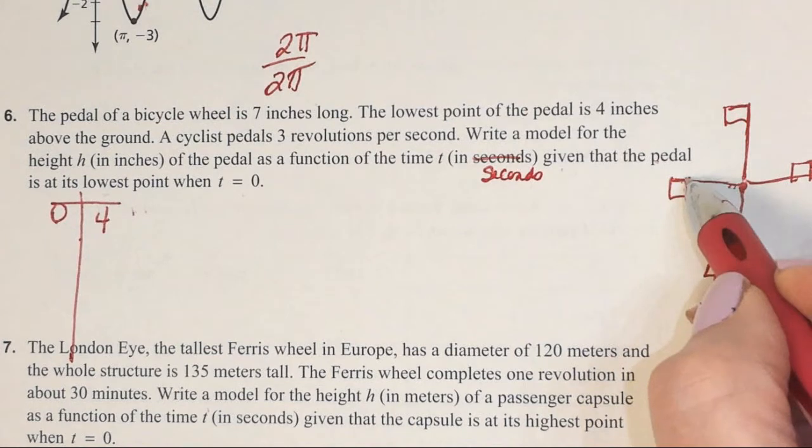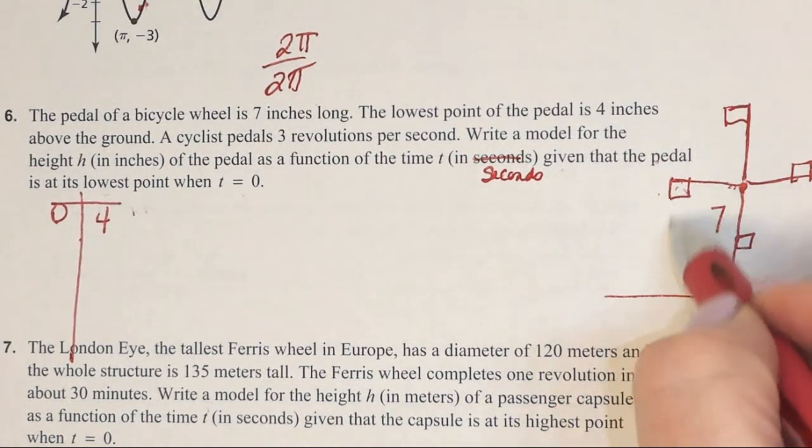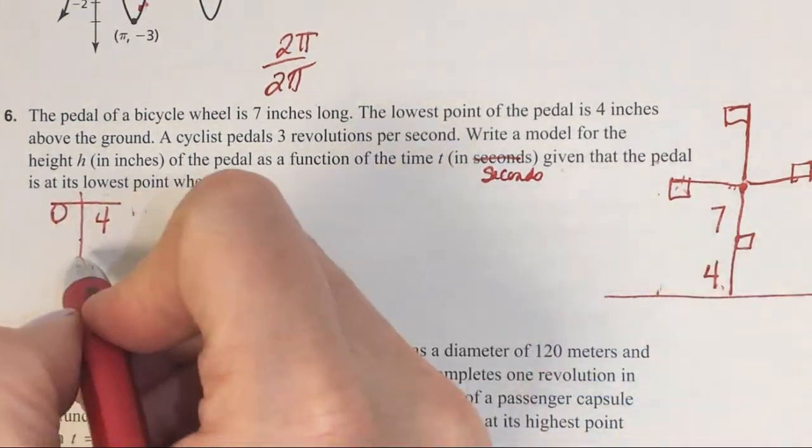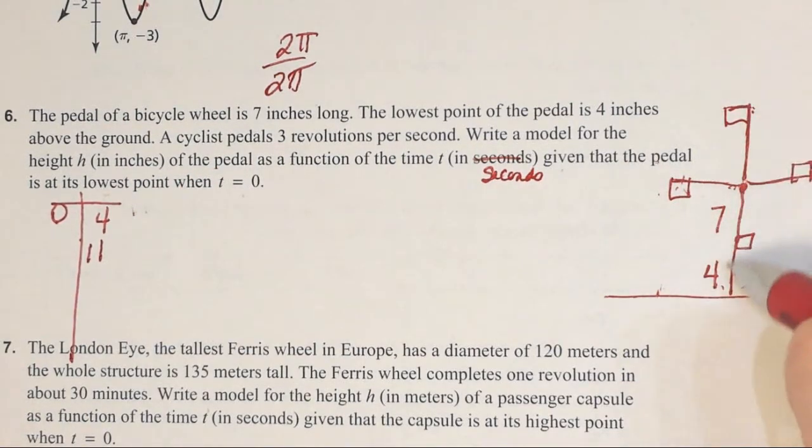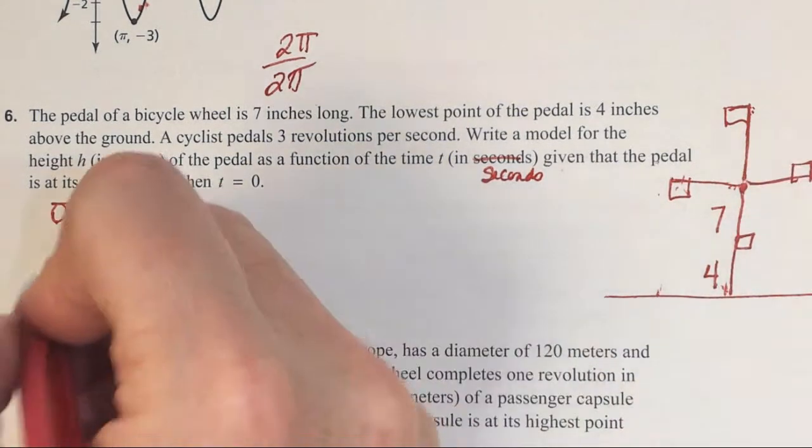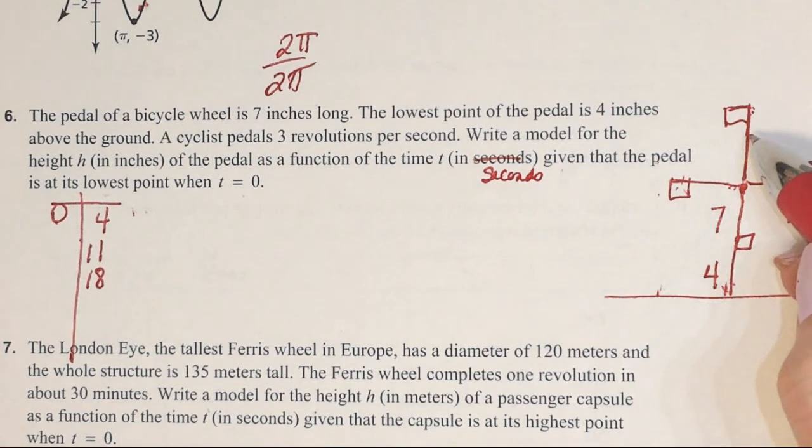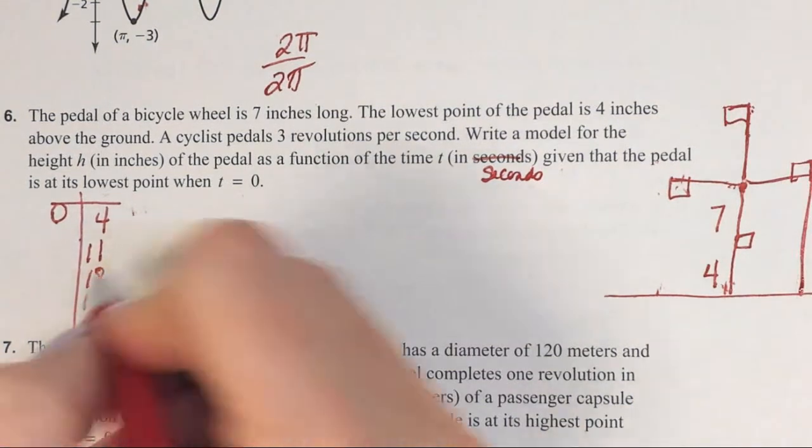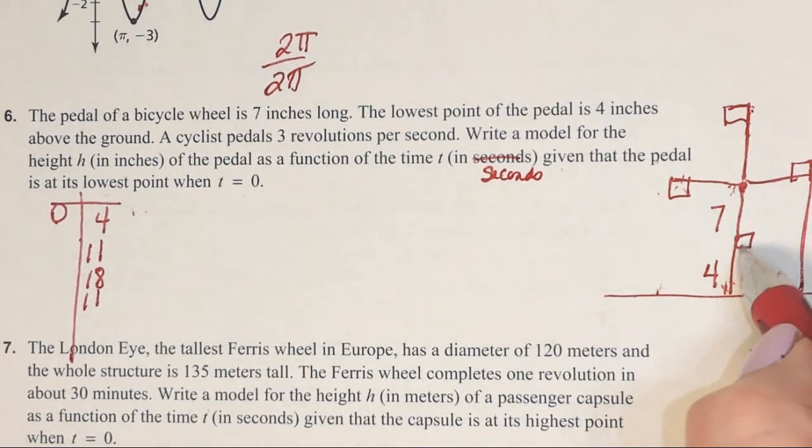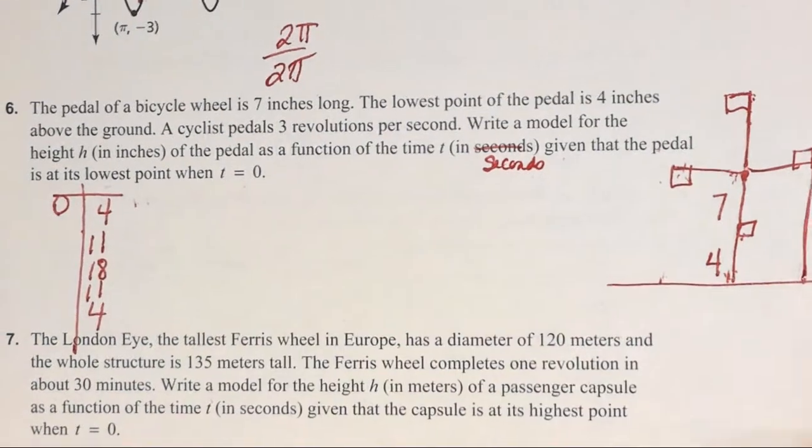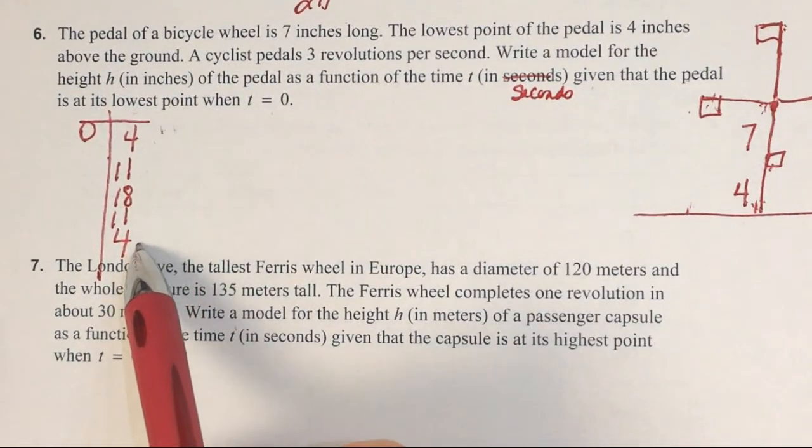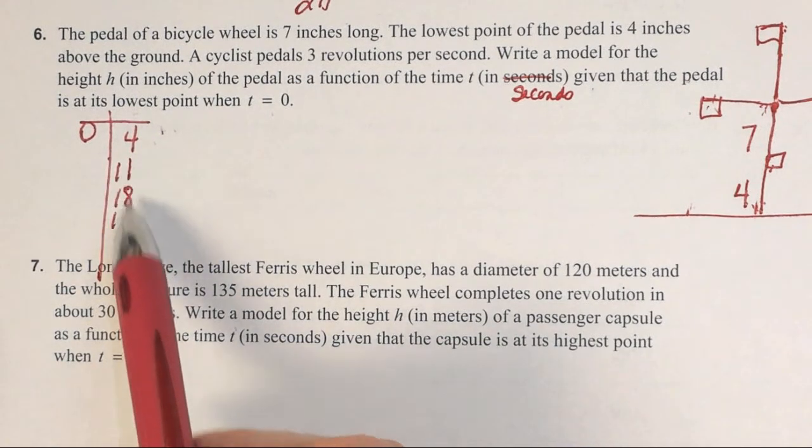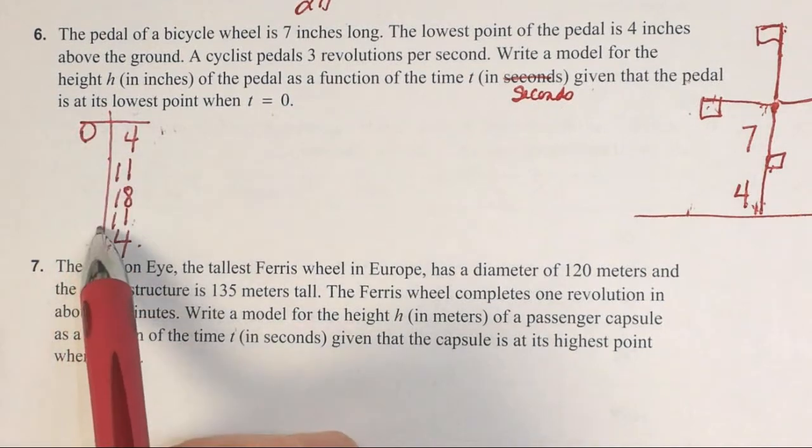Let's make a chart for the y values. At zero time, how high off the ground? 4. At its next point? 11. At its next point? 18, because I do 4 plus 7, plus another 7. How high here? 11. And at the end point? 4 again. Looking at this pattern, is this sine or cosine? Cosine, because these two are the same.